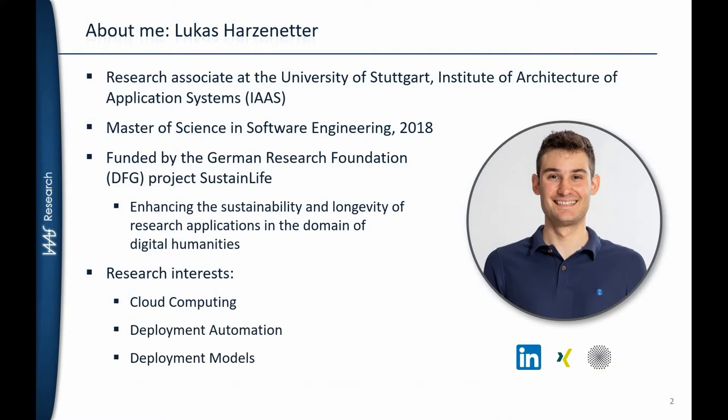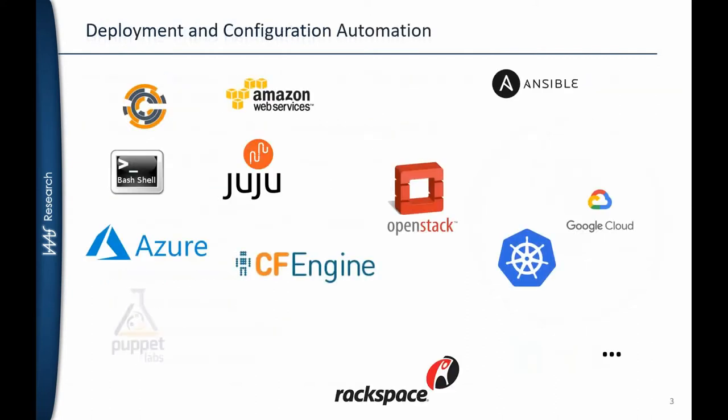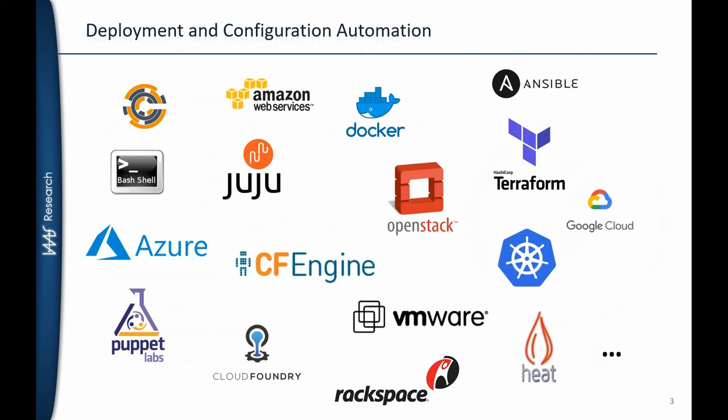My research interests are mainly in cloud computing and deployment automation. So what is deployment and configuration automation? There are many different tools and software available to do that. For example, we have different kinds of web servers like Amazon Web Services and Google Cloud, and we have many different technologies for deploying and configuring applications — for example, Terraform, Chef, ChooChu, or even Docker containers.